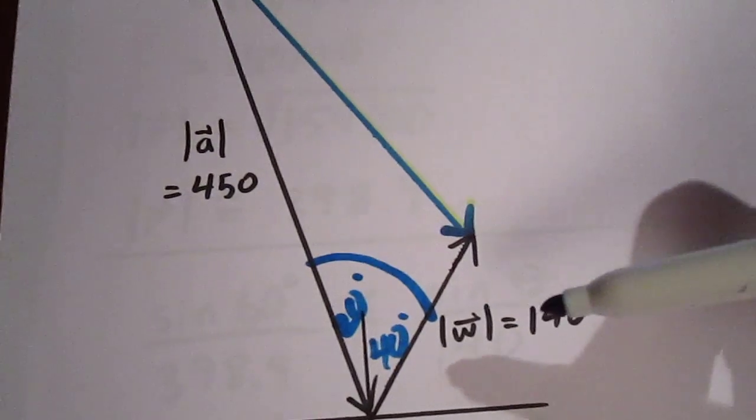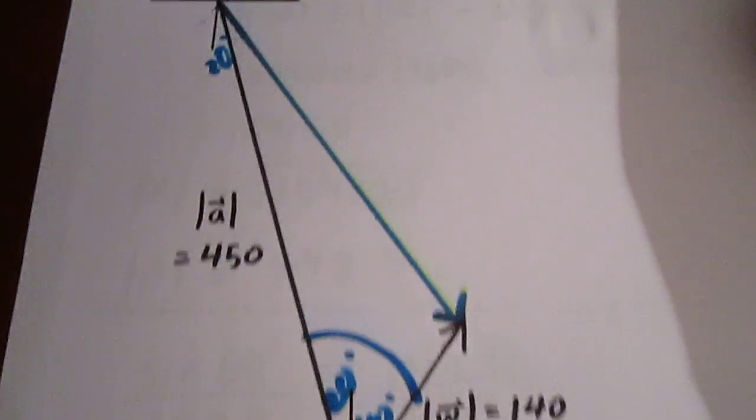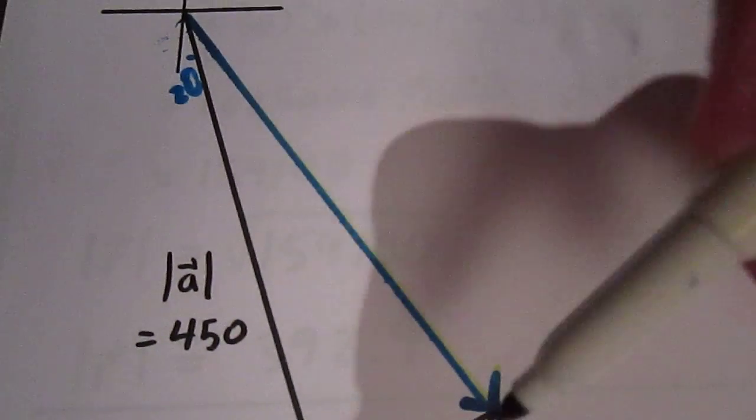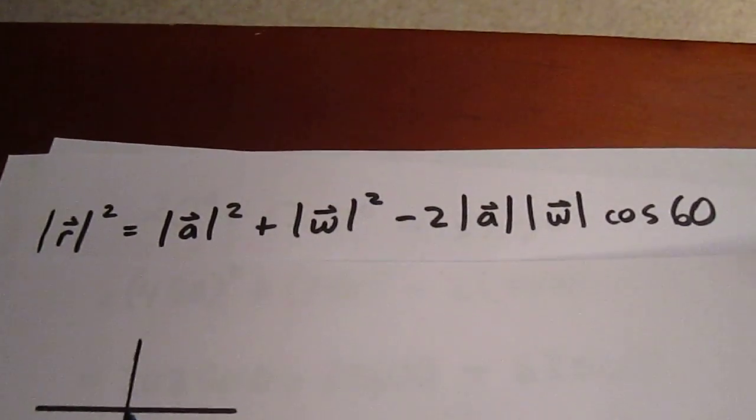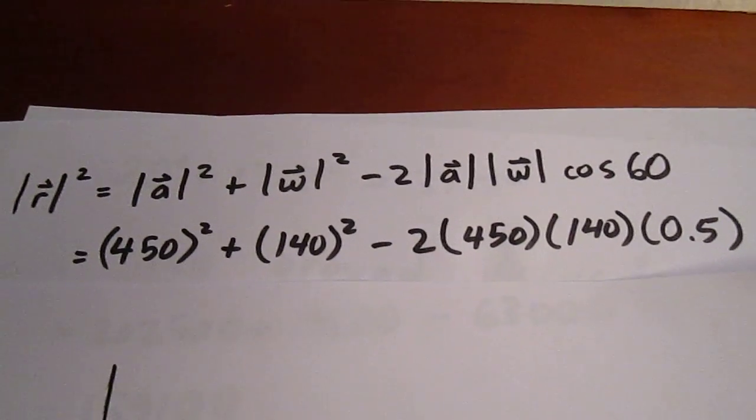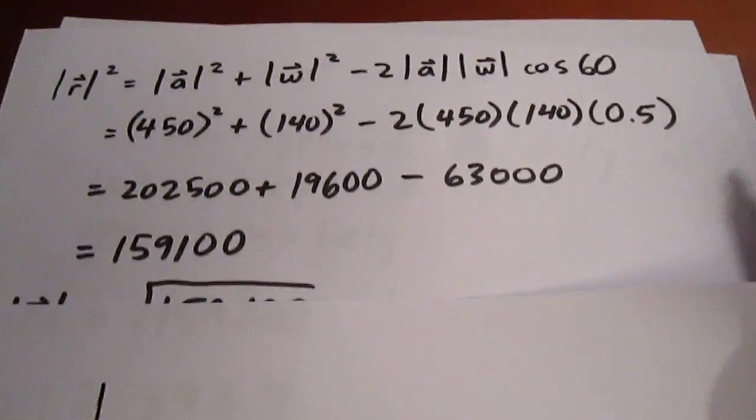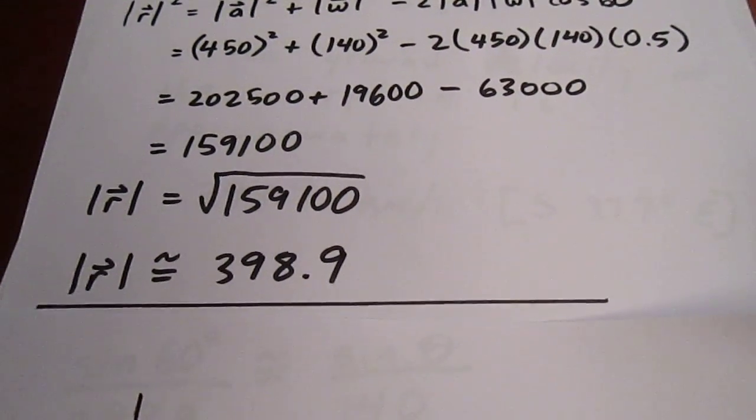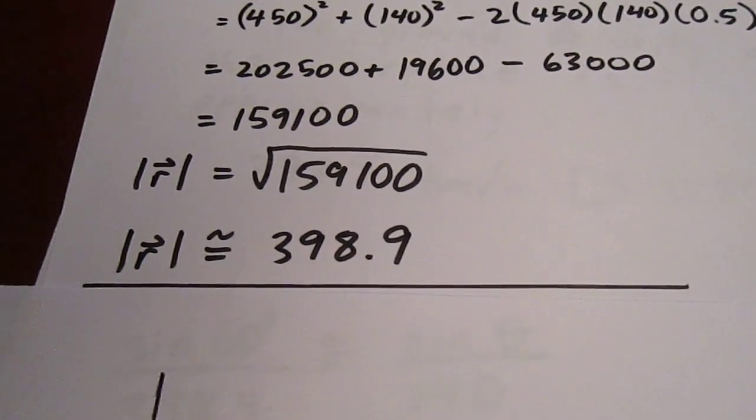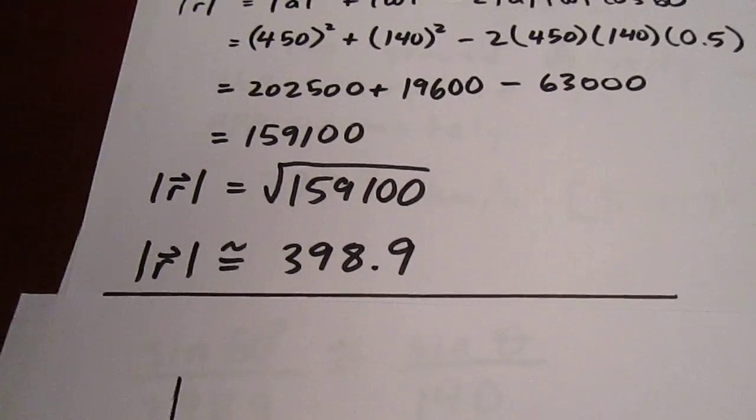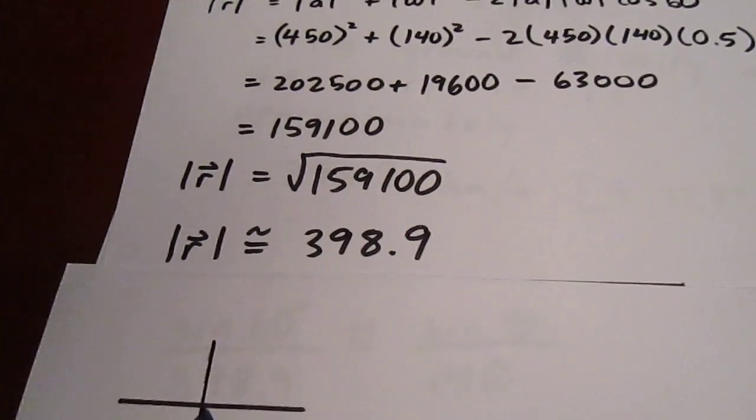So we can then consider our magnitude of 450 and magnitude of 140 and use the cosine law to get the magnitude of this resultant blue vector. Using the cosine law, we see that r squared equals 159,100 such that r is approximately equal, magnitude-wise, to 398.9 kilometers per hour.